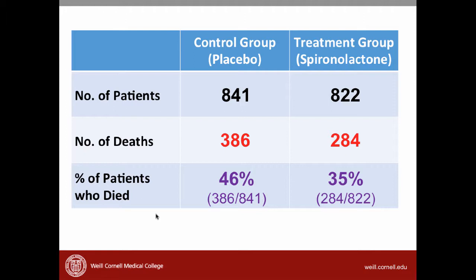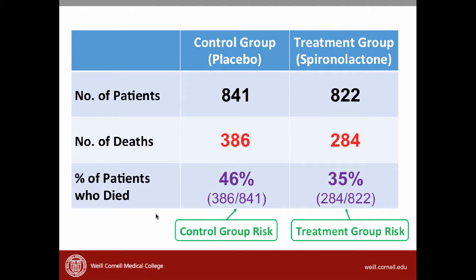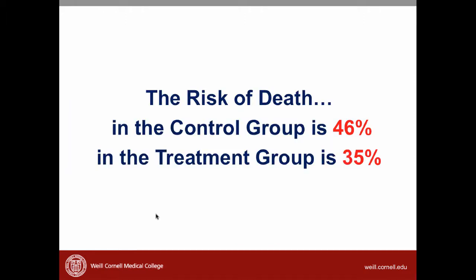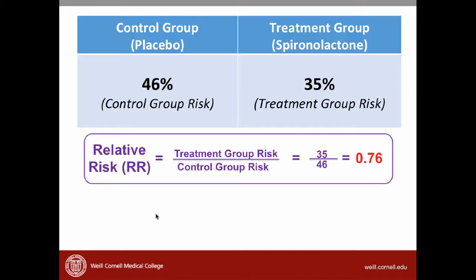As you can see from these numbers, a higher percentage of patients died in the control group — 46% — compared with the treatment group, which had only 35% of patients die. The first term to understand the treatment effect is the control group risk: the percentage of patients in the control group who had the outcome, which is 46%. The next term is the treatment group risk, also called the experimental group risk, which is 35%. In plain language, the risk of death in the control group is 46% and in the treatment group is 35%.